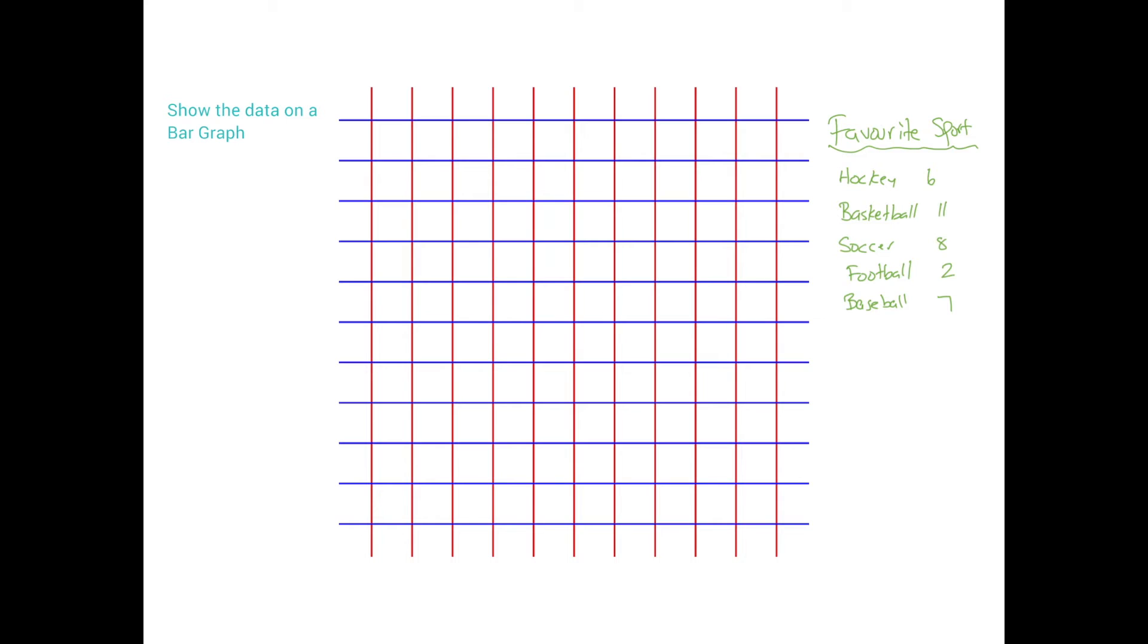So here we have favorite sport. We need to have our x and y-axis. That's the first thing we should draw out. I'm going to draw it right over here. I'm going to give myself plenty of space. So again, if you're doing this on paper, you definitely, definitely need a ruler.